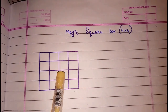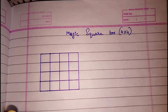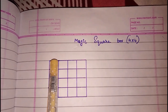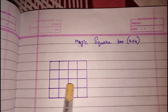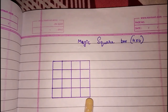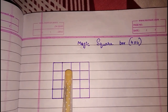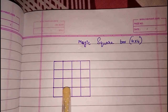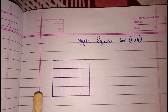Look here — the box is given to you. There are 16 boxes. We have to arrange numbers in this box such that the sum of the numbers horizontally, vertically, or diagonally will be equal. And the sum of each group of 4 boxes will also be the same.